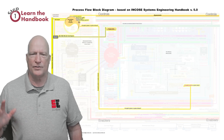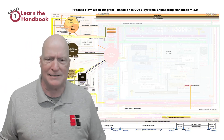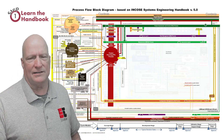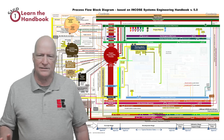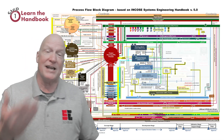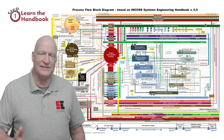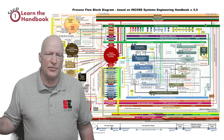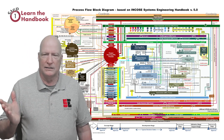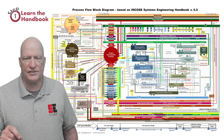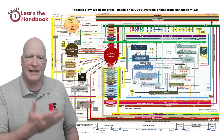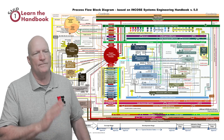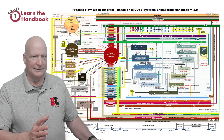I actually start with a blank slate. Then I go through the agreement processes, move to the organizational processes where a project is started, then the technical management processes which surround the technical processes that actually create the system of interest. That system has to be designed, built, deployed, operated, and eventually disposed of. So I teach all 31 processes by building this chart one process at a time. If you look closely at the diagram here, you'll see how all the processes interact with each other and how they fit within the context of the vast machinery of system engineering.